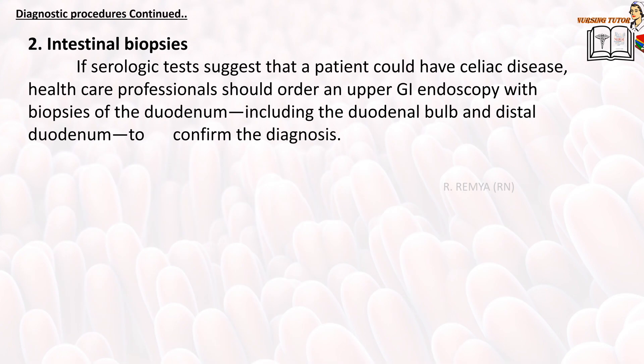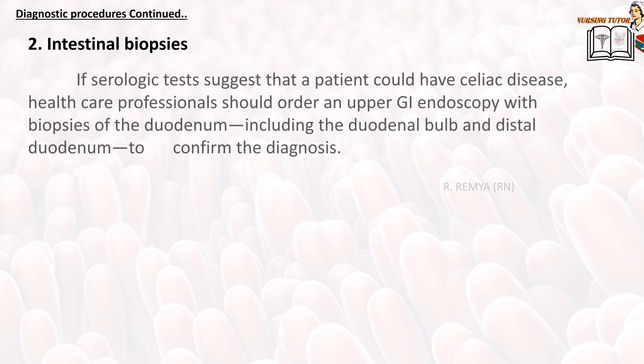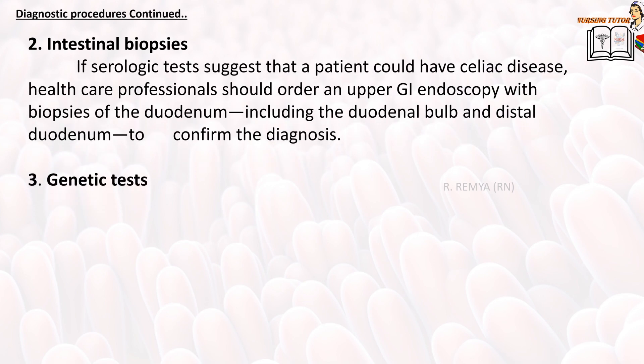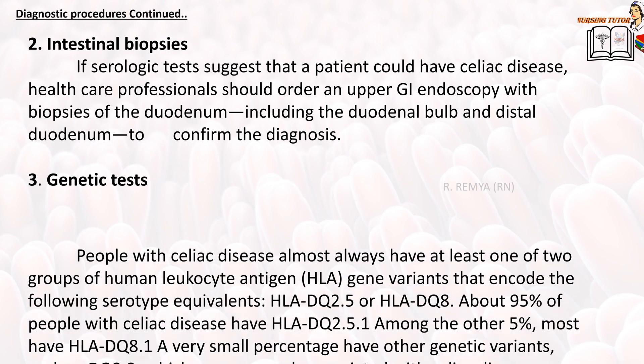For intestinal biopsies: if serologic tests suggest celiac disease, healthcare professionals should order an upper GI endoscopy with biopsies of the duodenum, including the duodenal bulb and distal duodenum, to confirm the diagnosis.